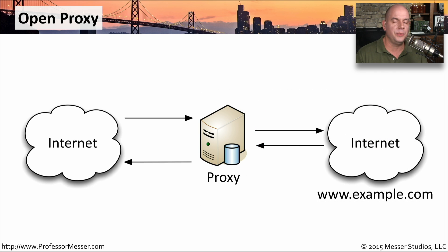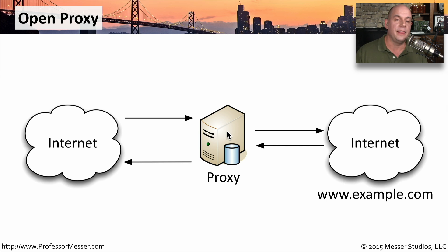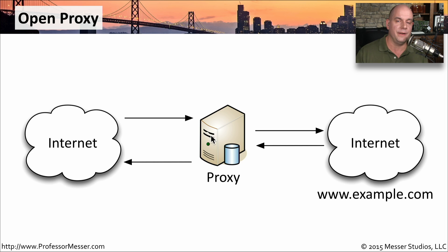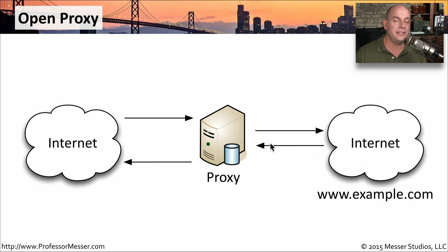Another type of proxy is an open proxy. Open proxies are commonly used if you're trying to remain anonymous or circumvent existing security controls. You make all of your communications to that open proxy, and the open proxy makes all the requests for you — to example.com, Google, Yahoo, or any other site. From your perspective, you're communicating to a single device, which is how you're able to circumvent security controls looking for a specific end station. By using this proxy, you can remain anonymous because end stations can't see your IP address — it's the proxy that's actually making the request.